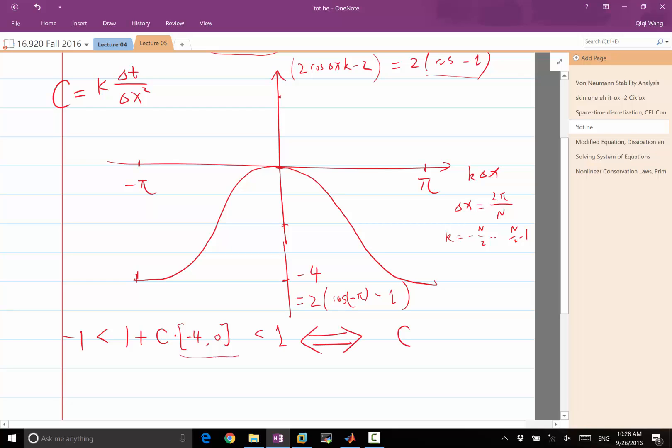C has to be first greater than 0 and less than what for this to be greater than minus 1? It has to be less than half.